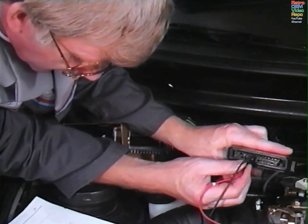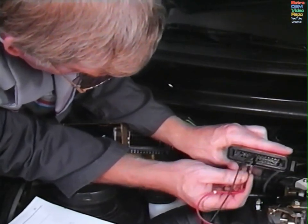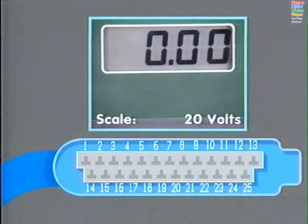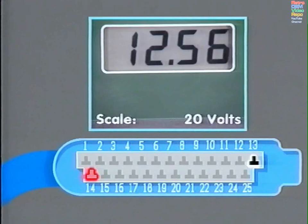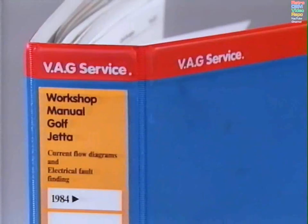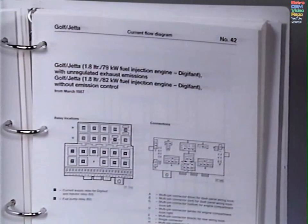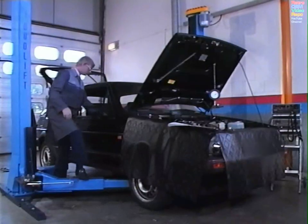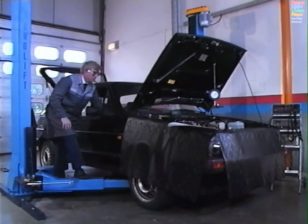The live to the control box comes from relay number one in the fuse board. With the multimeter set at the 20 volt scale, a test between the control box connections 13 for earth and 14 live must show battery voltage with the ignition switched on. If not, check for voltage drop using the current flow diagram. Switch off ignition. All the other components can now be checked individually.